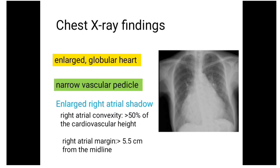These are the x-ray findings of right atrial enlargement: the heart appears enlarged and globular, the vascular pedicle is narrow, the right atrial convexity is more than 50% of the cardiovascular height, and the right atrial margin is more than 5.5 cm from the midline.